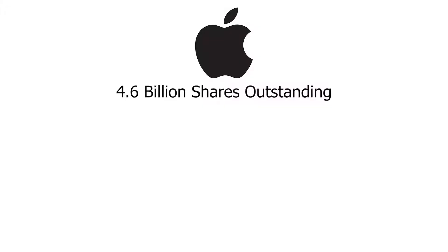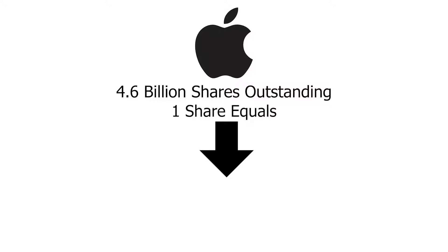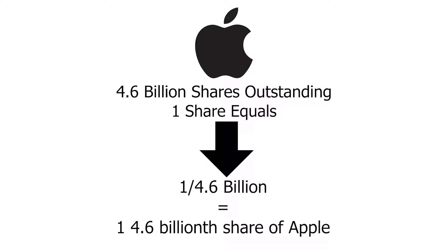Now, these common shares grant the owner part ownership in the respective company relative to the total amount of shares outstanding. So for example, there are 4.6 billion Apple shares outstanding at the moment, and if you were to have one Apple share, that would mean you would have a 1 in 4.6 billionth ownership stake in Apple. Now, as an owner, you are entitled to reap the rewards of the company's future business dealings, and having these shares and stocks grant you some fundamental rights as a shareholder.